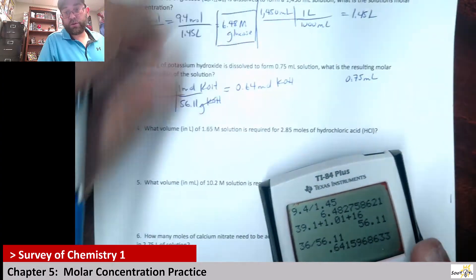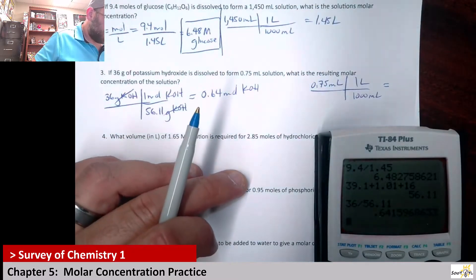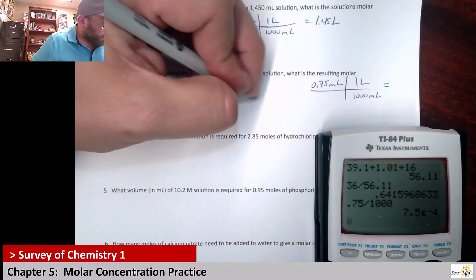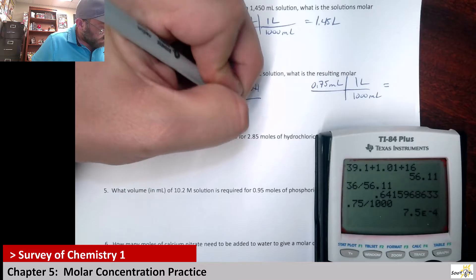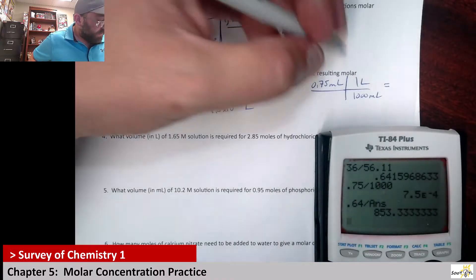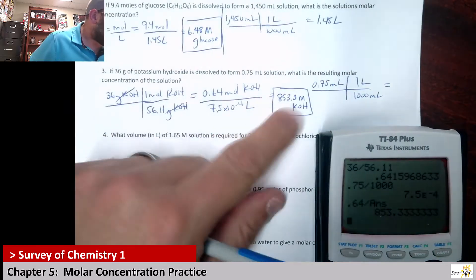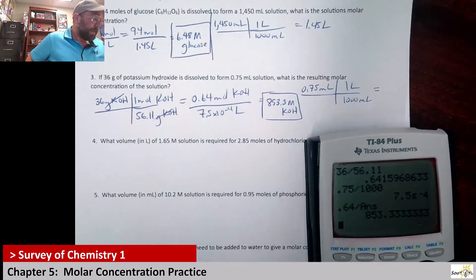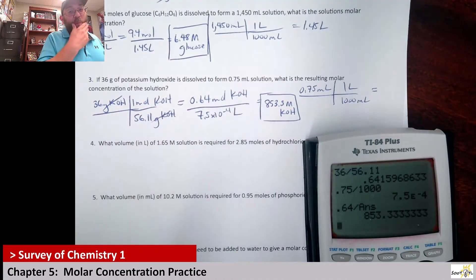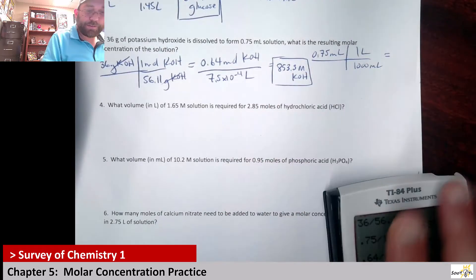And then that's a milliliter solution. 0.75 milliliters. We know there's 1,000 milliliters in 1 liter. That's a super small amount. So 0.75 divided by 1,000. 7.5 times 10 to the negative 4. I'm going to divide that 7.5 times 10 to the negative 4 liters. 853.3 molar KOH. I'm going to tell you right now, you're not going to make that high of a concentration. So there is obviously a typo. I think that was meant to be 0.75 liters, not milliliters. But I'm going to do it the way it says it.